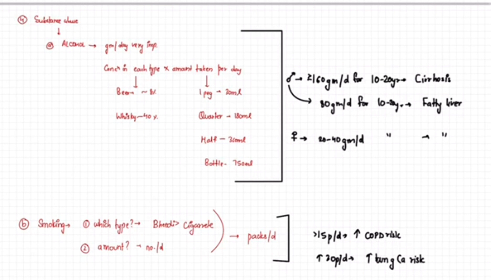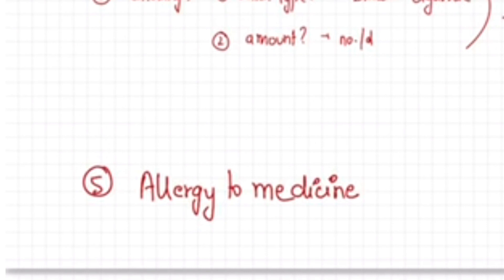Similarly, smoking history should also be very detailed. Like one is what patient takes, if the patient takes a beedi or cigarette, as the beedi is more dangerous. Then amount per day, and then you calculate the pack years. It also has significance, like if the patient takes more than 15 pack years per day, then it increases the risk of COPD, whereas if the pack years are more than 30, it has a high risk for lung cancer.